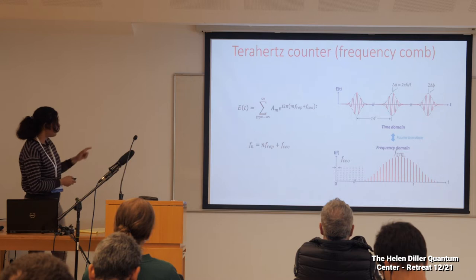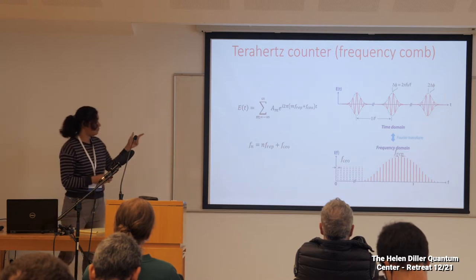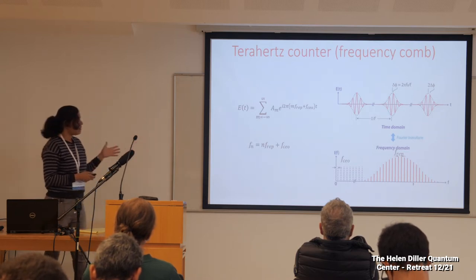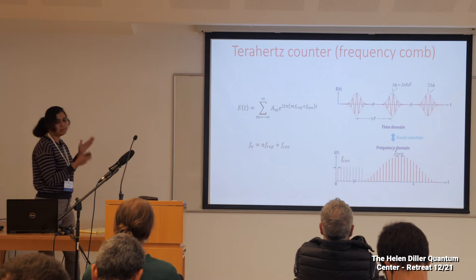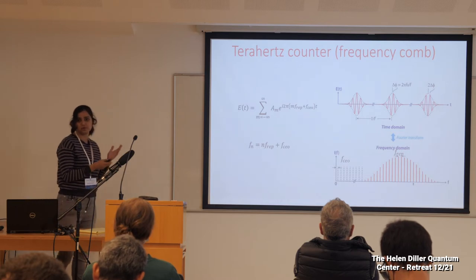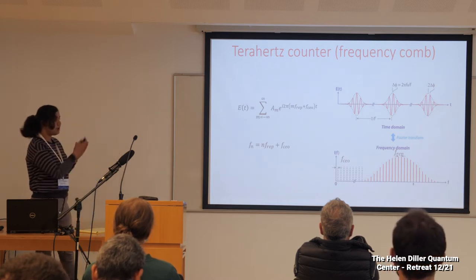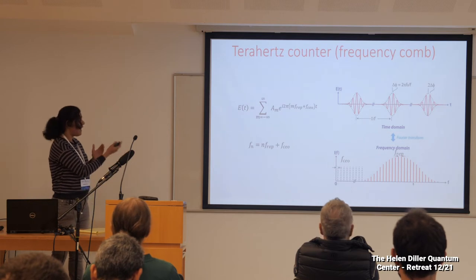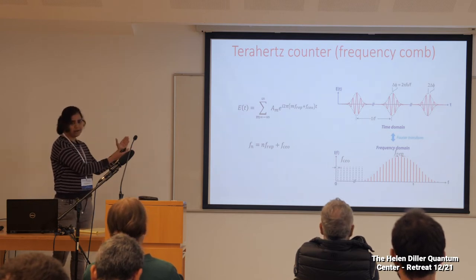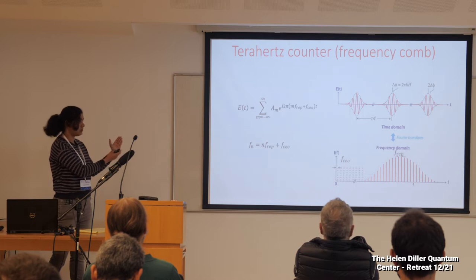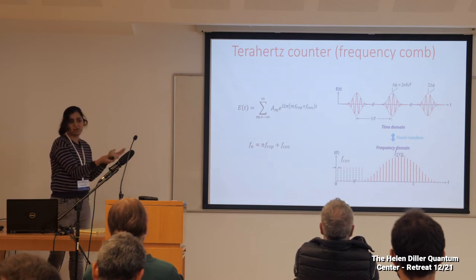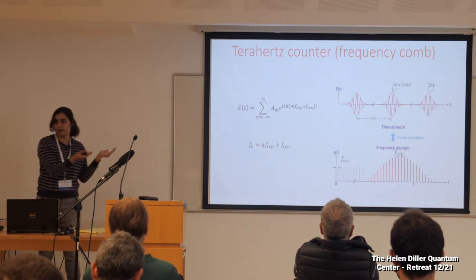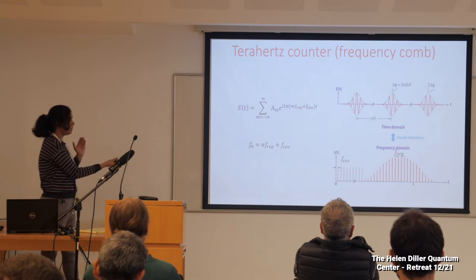Each of these lines can be represented by the formula: n times F-repetition-rate plus F-CEO. What makes the frequency comb so special is that all these lines are in the terahertz, optical domain, and it gives a link between the optical domain and the RF domain. So you can measure optical frequencies by measuring RF frequencies, since there are no photodetectors in the optical domain.